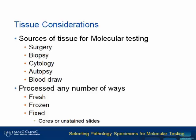Sources for obtaining tissue for molecular testing include various surgical procedures, a range of different types of biopsies, cytology, and even autopsy specimens. As an example of evolving technology, we have been hearing for some time now about blood draws as liquid biopsies for solid tumors, and this is now quickly becoming a viable clinical option. The tissue obtained from any of these procedures can be processed in a number of different ways. While fresh or frozen tissue often leads to the best quality nucleic acid, it is fairly rare in routine practice, difficult to obtain, and store long term.